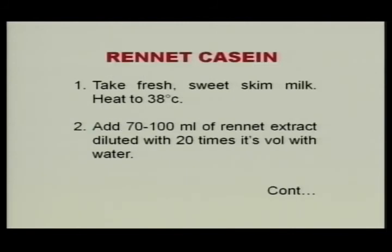This was the manufacturing of acid casein from fresh sweet skim milk utilizing hydrochloric acid, sulfuric acid, or lactic culture. For rennet casein, take fresh sweet skim milk, heat to 38°C, then add 70 to 100 ml of rennet extract. The rennet extract contains rennin enzyme which coagulates the skim milk. The dried rennet powder extract should be diluted with 20 times its volume of fresh clean water.